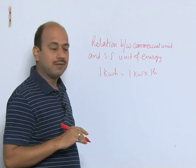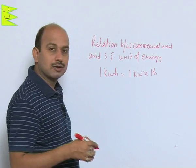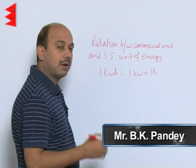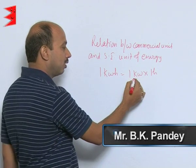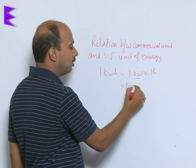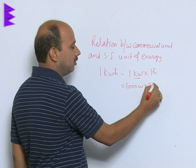For SI unit, everything has to be in meter and time has to be in seconds. The SI unit of power is watt, so we must write here watt. We can write 1000 watt into 3600 seconds.